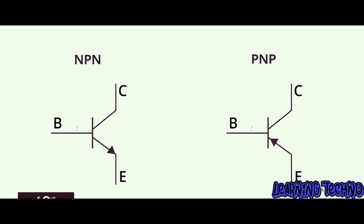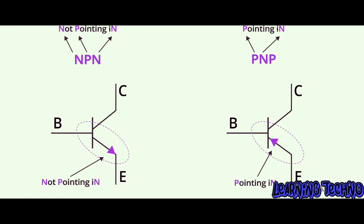Here's a couple of tips for you. The arrow is always part of the Emitter-Base connection. The types can be identified by the direction of the arrow.